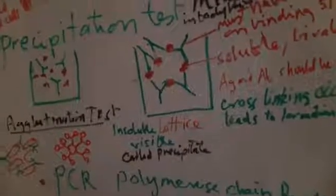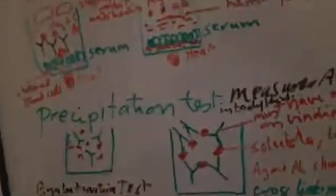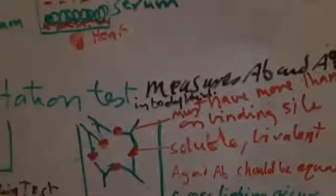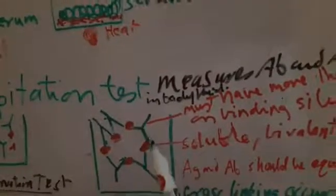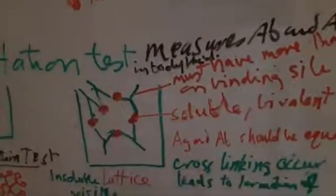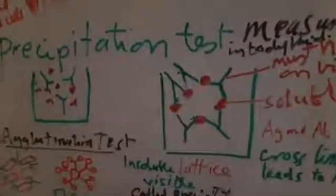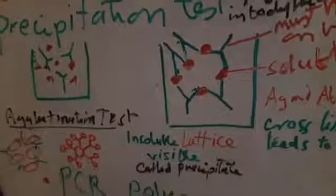In precipitation we add antibodies to an equal amount of antigens. Antibodies must have more than one binding site and the antigens should be soluble and bivalent. They will bind to each other and lead to formation of immune complex or insoluble lattice.